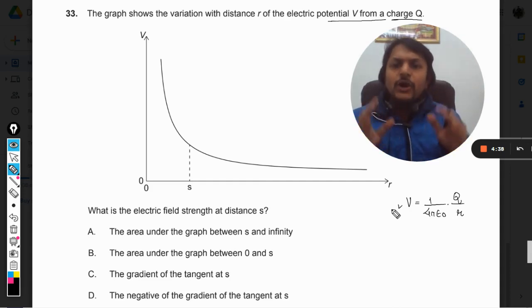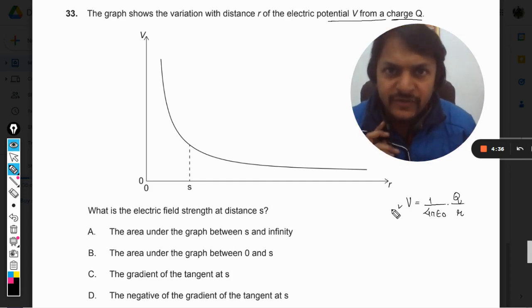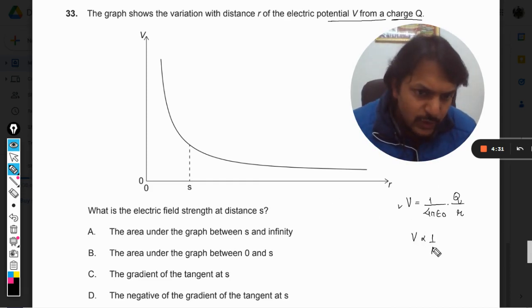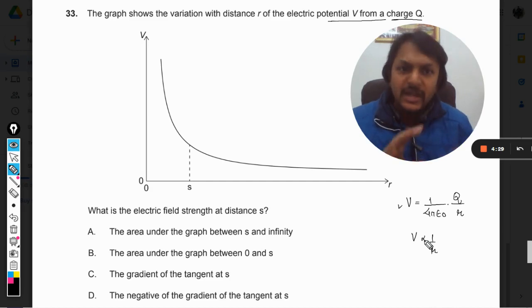So it's the general formula and V is directly proportional to 1 by r. So obviously there will be a hyperbola kind of variation and that's exactly what is shown here.